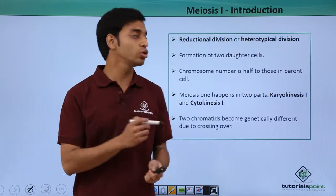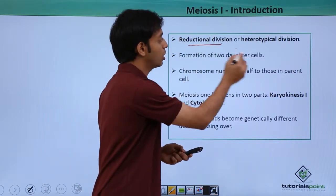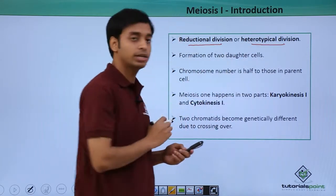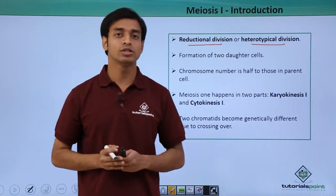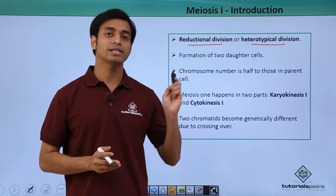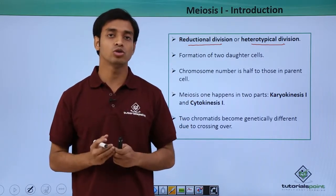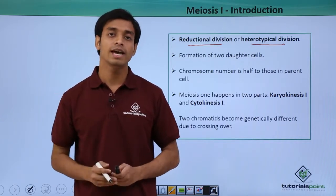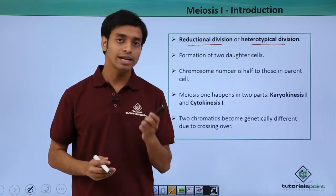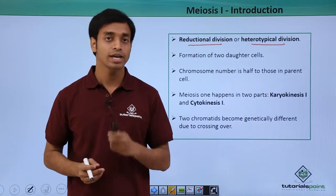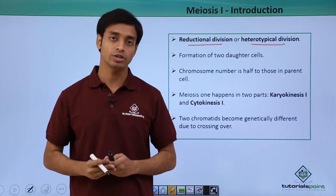Meiosis 1 is also known as the reductional division or the heterotypical division. Why is it known as reductional division? Because in meiosis 1, the number of chromosomes which was present initially in the parental cells now gets halved or reduced. Hence, this is known as the reductional type of division.